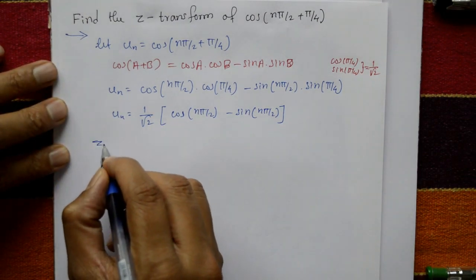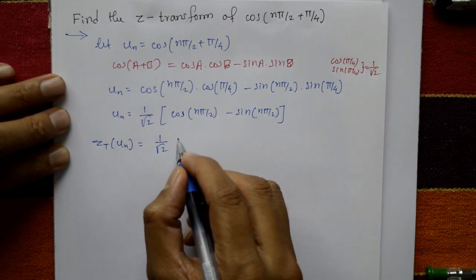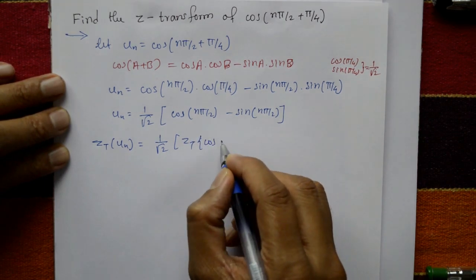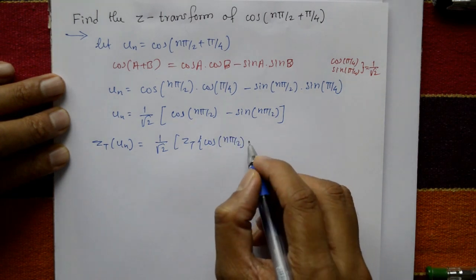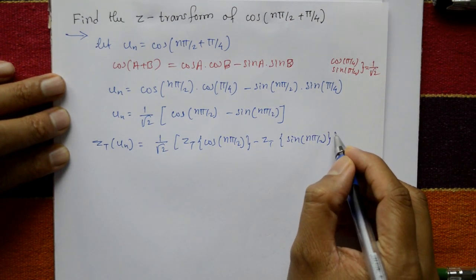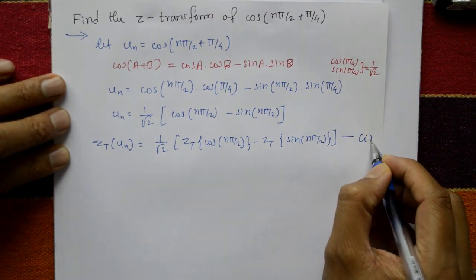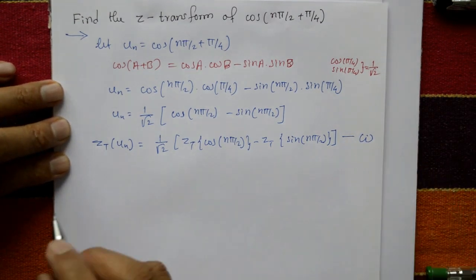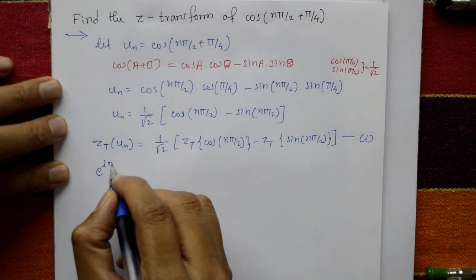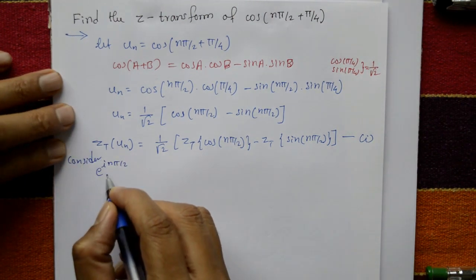Now apply the Z-transform to both sides. Z{u(n)} = (1/√2) · [Z{cos(nπ/2)} − Z{sin(nπ/2)}]. We need to find Z{cos(nπ/2)} and Z{sin(nπ/2)}. Call this equation number 1.